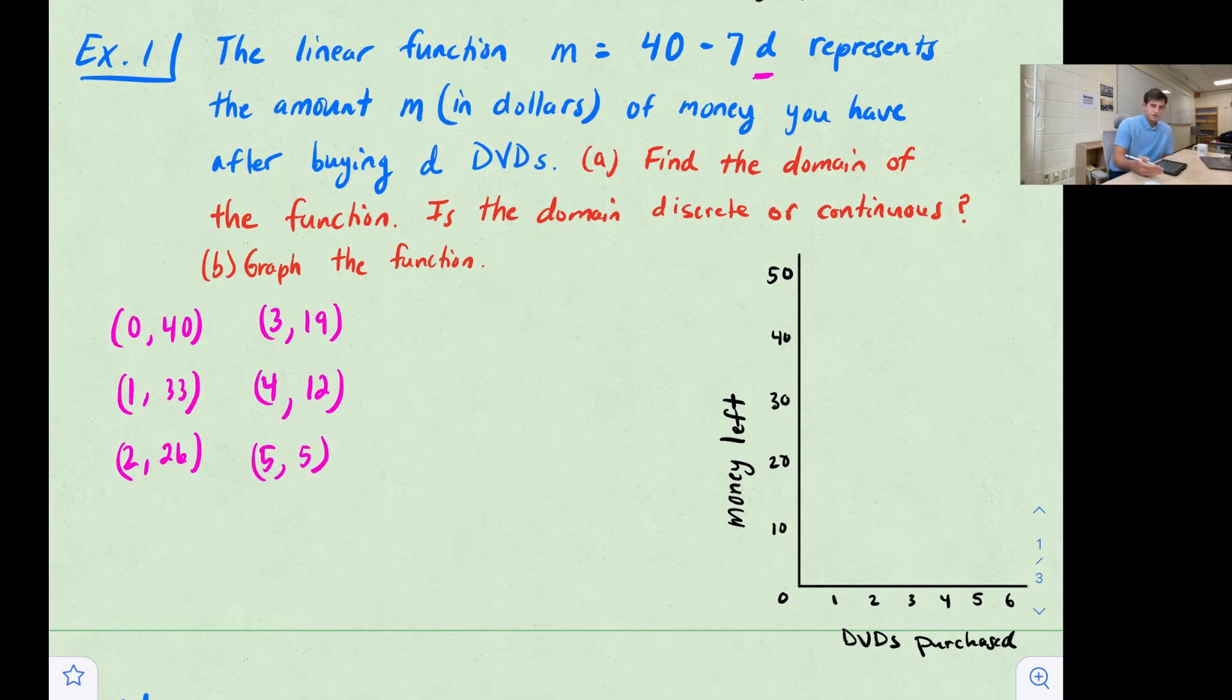We still have enough to buy a fifth DVD and we would have $5 remaining. But at this point, we cannot buy another DVD because we don't have $7 remaining. We only have $5 remaining and we can't buy half a DVD. We can't buy a fraction of a DVD, so we have to stop there. So our domain would just be our input values, right? So 0, 1, 2, 3, 4, 5. That would be our domain.